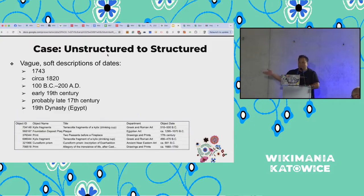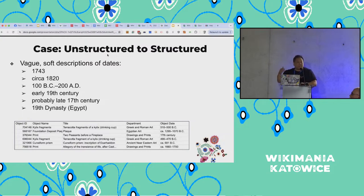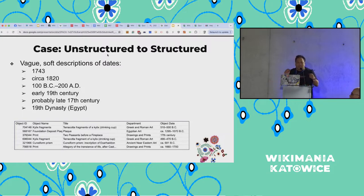So we see things like 'circa 1820,' meaning kind of 1820. We might cross from BC to CE or AD — different departments of a museum have been known to use either one. 'Early 19th century' — what does that mean? 'Probably late 17th century.' Once you start trying to make a computer program extract this, it spirals out of control and you don't know how to solve this problem. For many GLAM institution ingestions or uploads, they just don't know what to do with the inception or creation dates — we often just leave it blank.